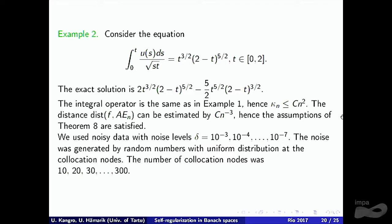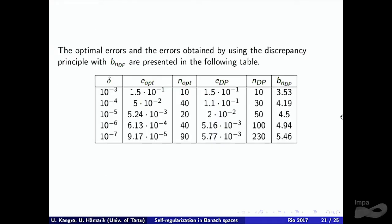Another example with the same kernel but a different — less smooth — right-hand side. The exact solution gives Kappa_N ~ c·N^2, and the distance from f to A·E_N can be estimated as O(N^{-3}). Results again show that errors from the discrepancy principle are not very different from optimal errors. However, in this case the N chosen by the discrepancy principle is generally larger than N-optimal — I'm not sure why, as the example was quite similar.